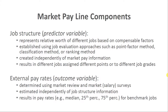Compensable factors include things like the education required for a job, the skill level, the amount of expertise, and whatever your organization determines holds value. You evaluate each benchmark job using those compensable factors, however you've scaled and weighted them. A job structure is established using some type of job evaluation approach — identifying compensable factors and determining how much each job is worth relative to others. Approaches include the point factor method, classification methods, or simple ranking methods.